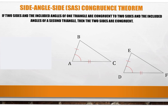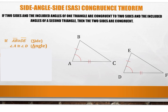Let's look at this congruence theorem part by part using triangles ABC and DEF. We'll identify the three necessary parts: two sides and one included angle. Our first corresponding sides are AB congruent to DE. The included angles are angle A congruent to angle D. Then our third parts are sides AC congruent to side DF. Once all three parts are congruent, we can conclude triangle ABC is congruent to triangle DEF.